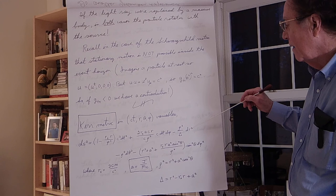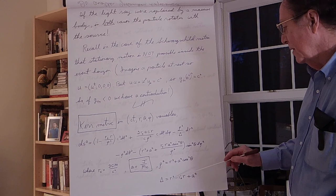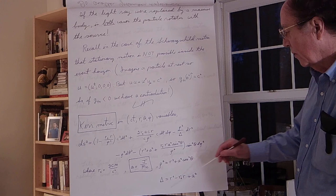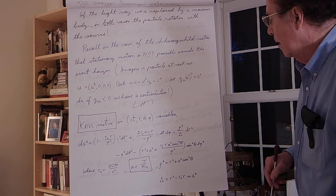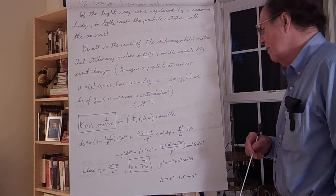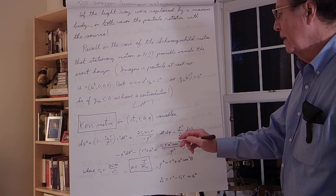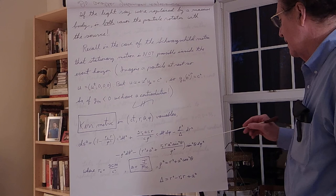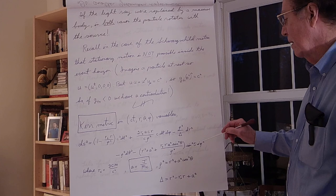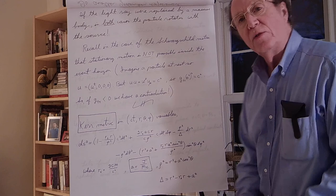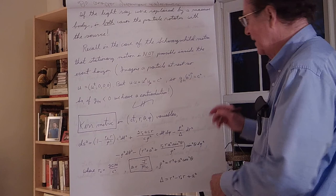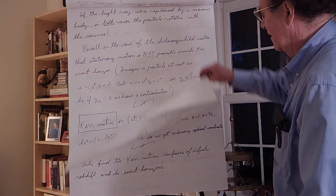There's a term going like dr² with a denominator Δ, where Δ = r² − r_s·r + a². There's a possibility for Δ to equal zero — it's in the denominator, so it's like having a divergence in the metric, similar to Schwarzschild. Then there's a ρ²dθ² term, and finally a term that goes like dφ², which again has the physical singularity 1/ρ². That's the metric — it's written down in your supplementary lecture 11. Hold it to the side because I'll be referring to it again and again.